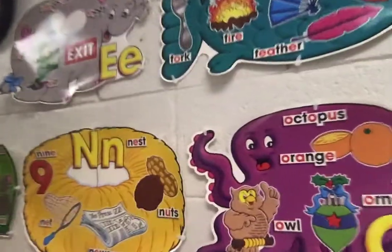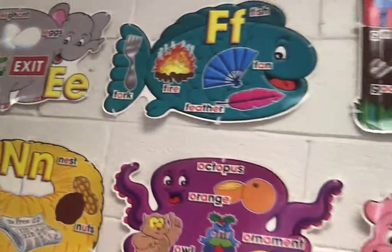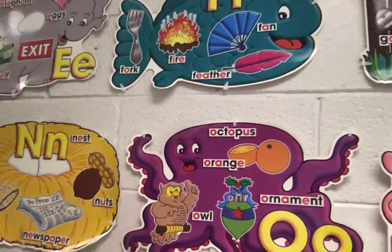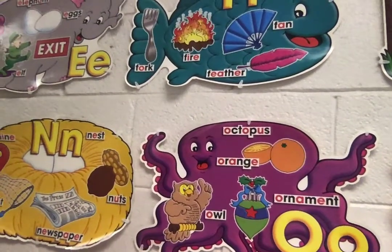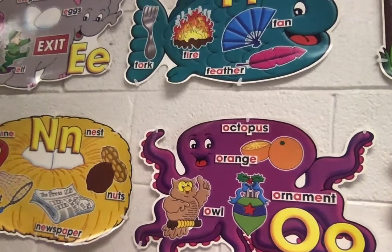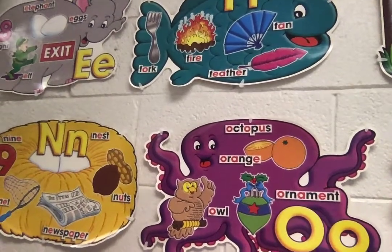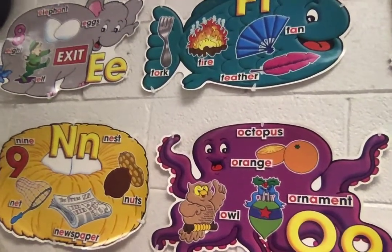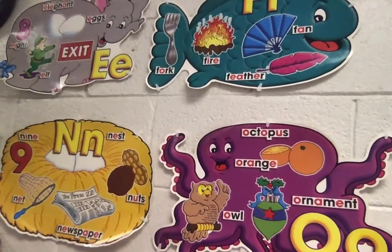Let's take a look right here. You see this octopus here? You see there's octopus, orange, owl, and ornament. That's a new word — we haven't talked about that one. That starts with the letter O.